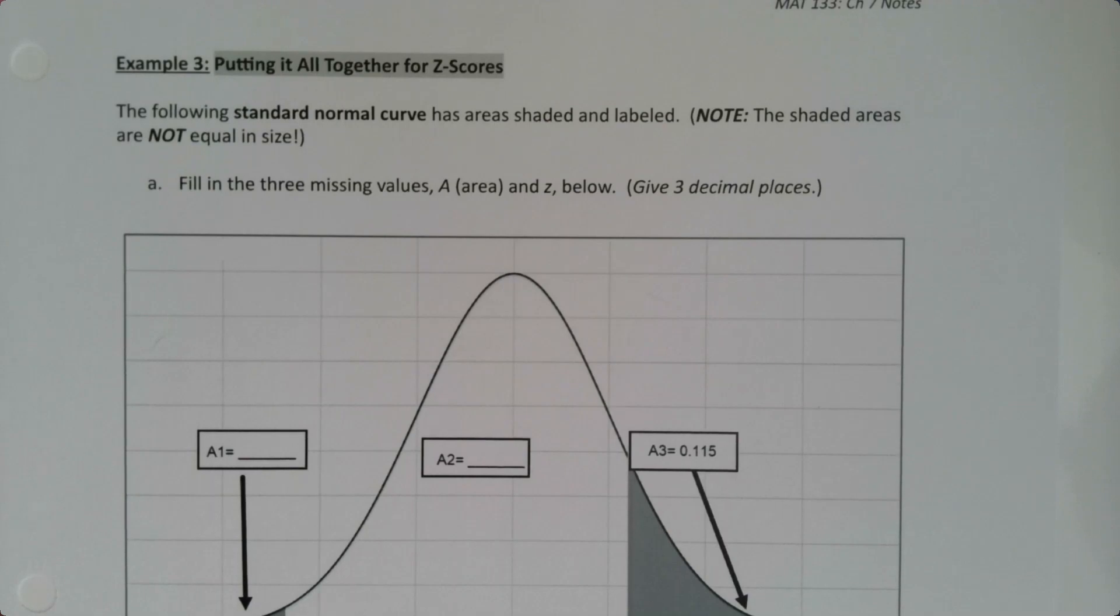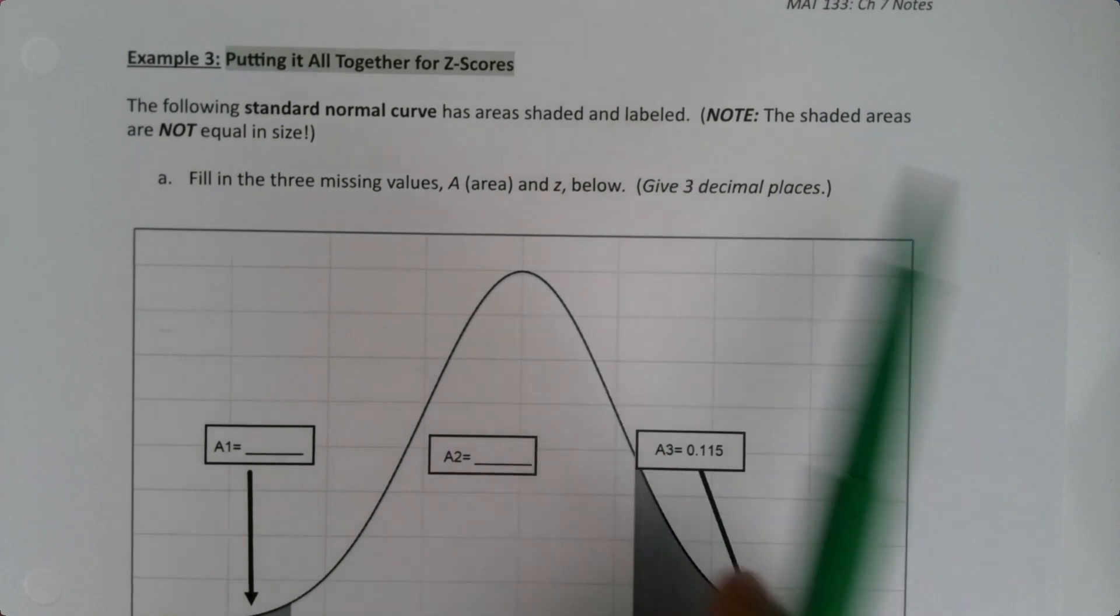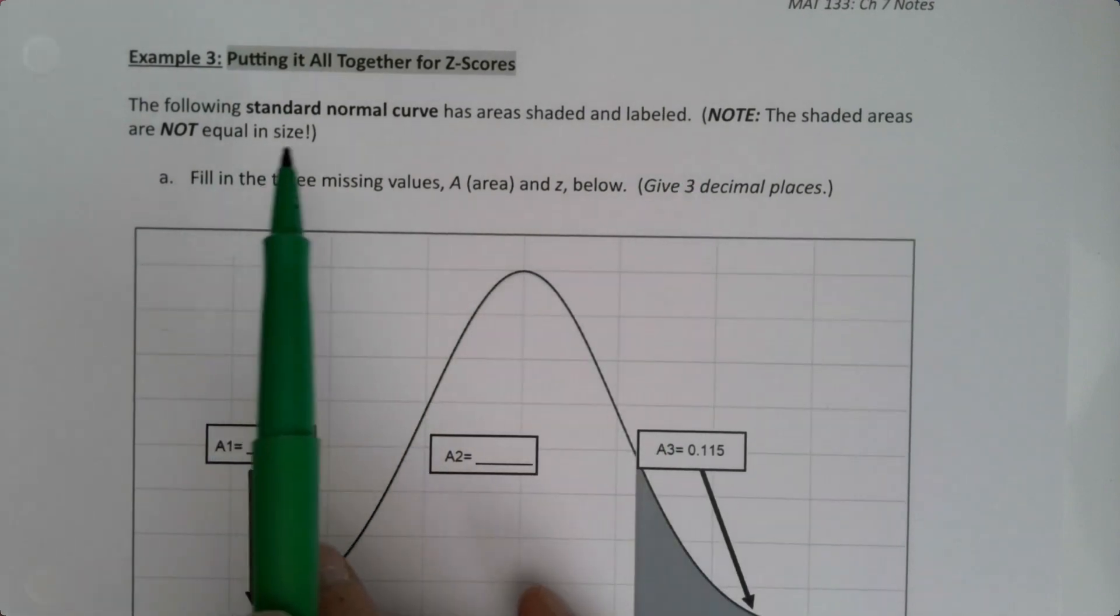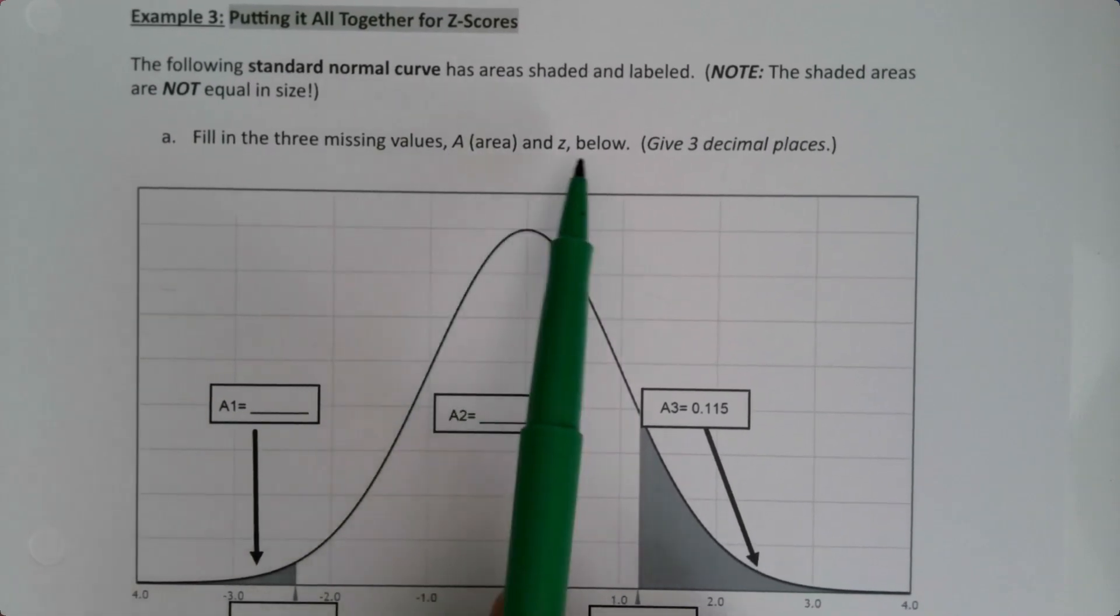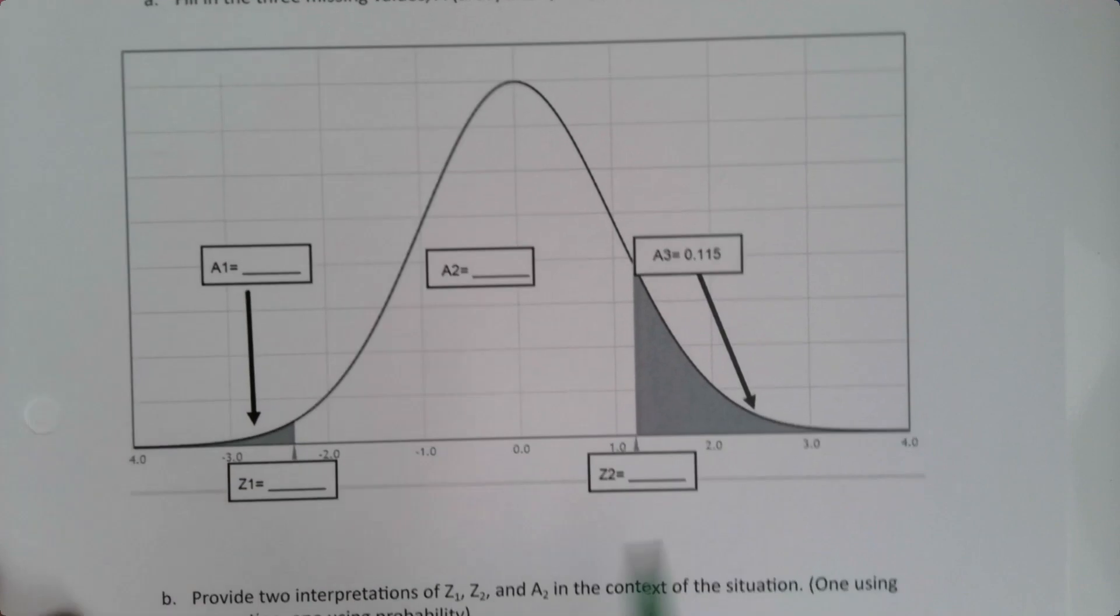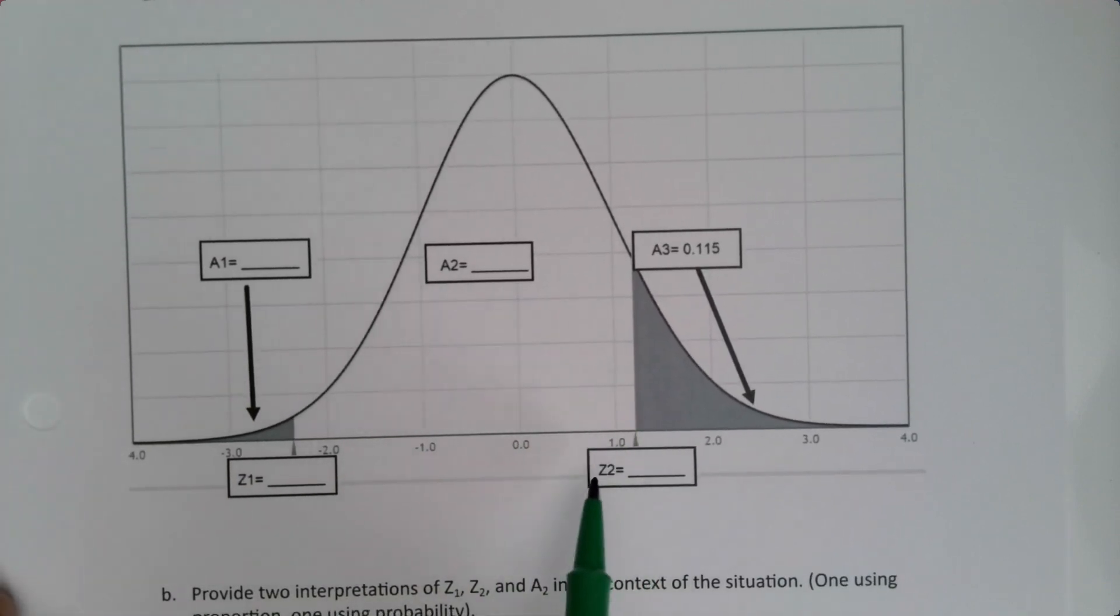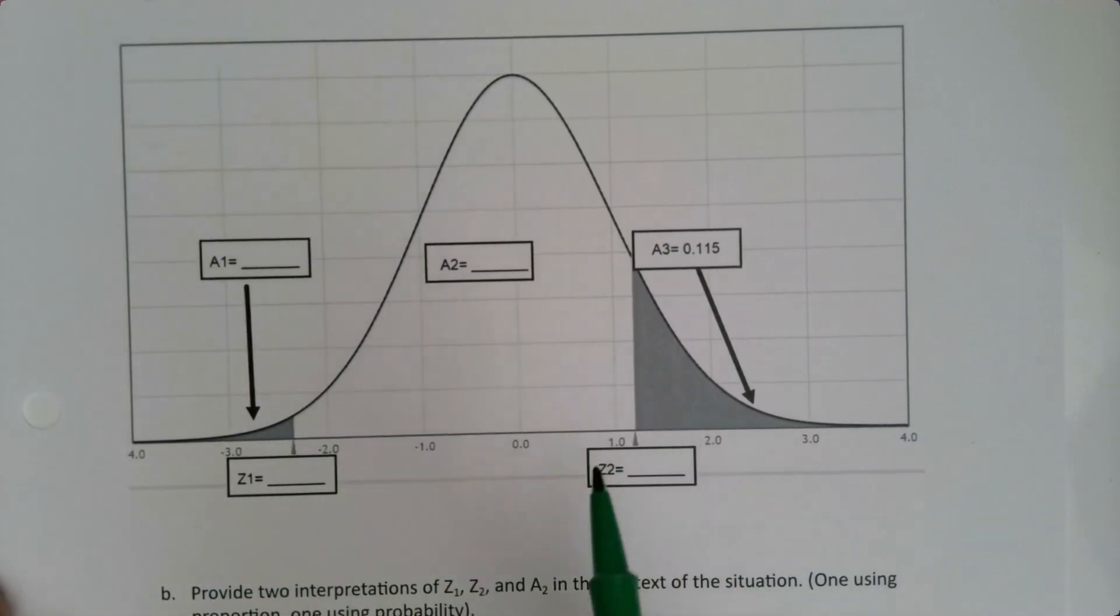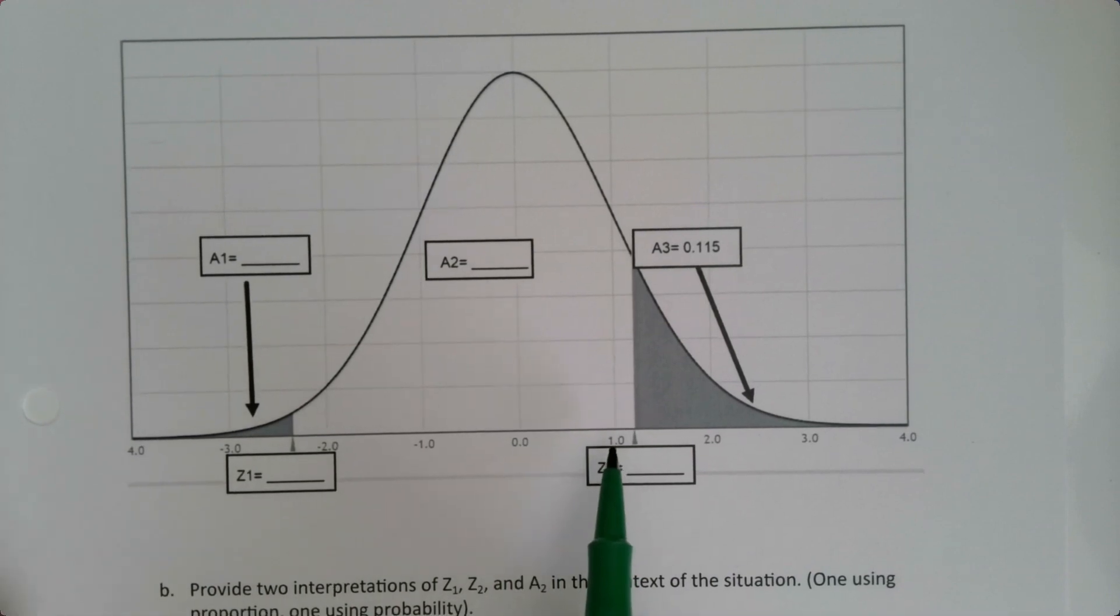So now it's time to put together everything we've learned so far about Z-scores and how to find them. We have the following standard normal curve with areas shaded and labeled. Note that the shaded areas are not equal in size, so fill in three missing values: the areas and the Z below. Now I say it's a standard normal curve, but you can actually tell without me having to say it. For one thing, there's a Z there. Once you see a Z, you know that it's a Z curve, a standard normal curve. You can also see that the center is 0 and the standard deviation is 1, so it makes it really obvious.